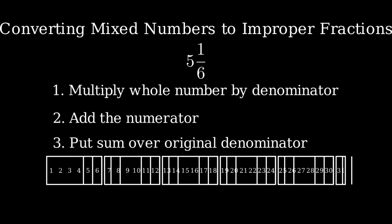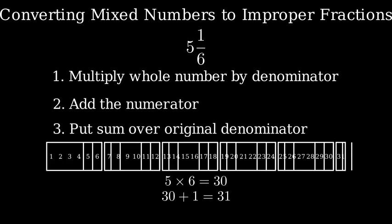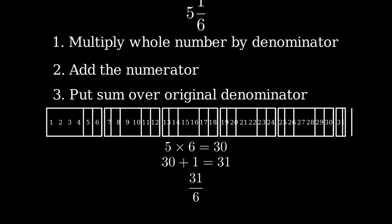Let's work through the calculation. First, we multiply 5 times 6, which gives us 30. Then we add 1, giving us 31. Finally, we put 31 over 6.